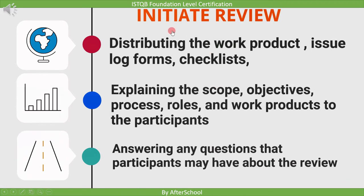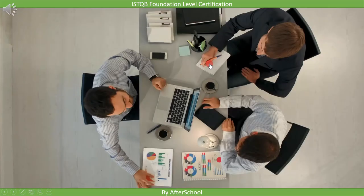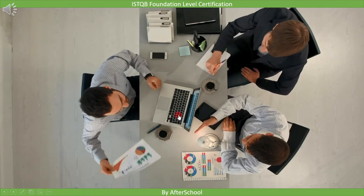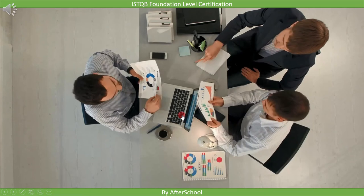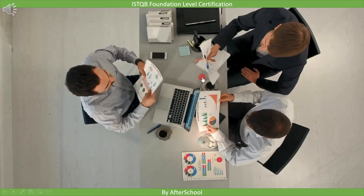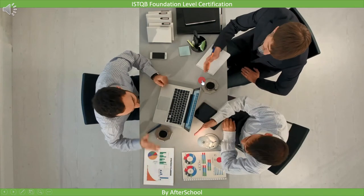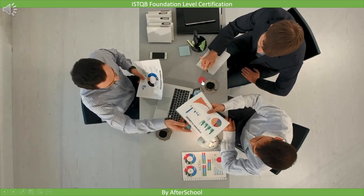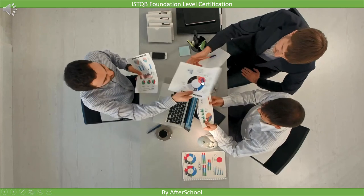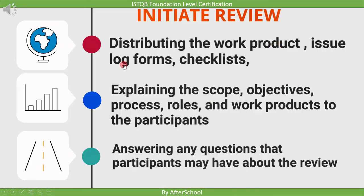Now I will explain the review initiation process in detail. The first task is to provide the work product, log sheet, and checklists. Before we start review, the work product is given to the team member, and along with it, the defect log sheet and checklist are provided. The use of the log sheet and checklist will be explained in the next activity. Remember: work product, log sheet, and checklists are provided in the initiation stage.